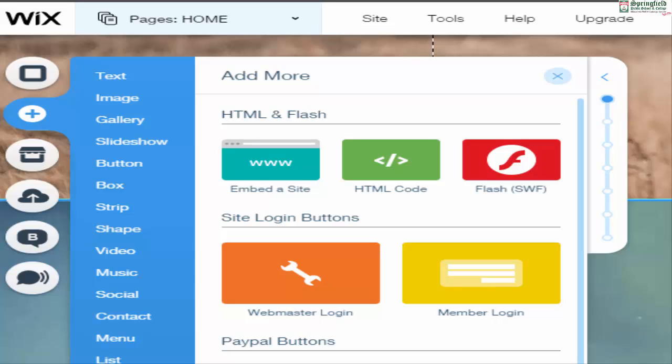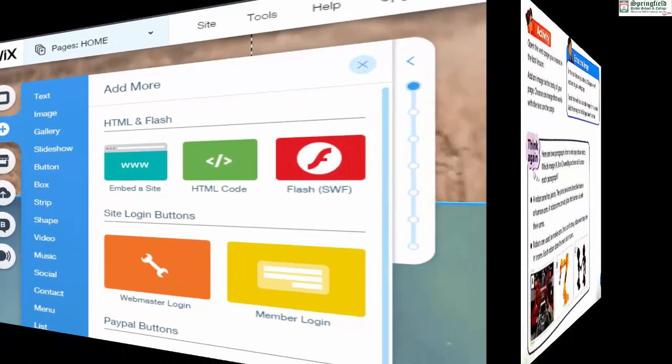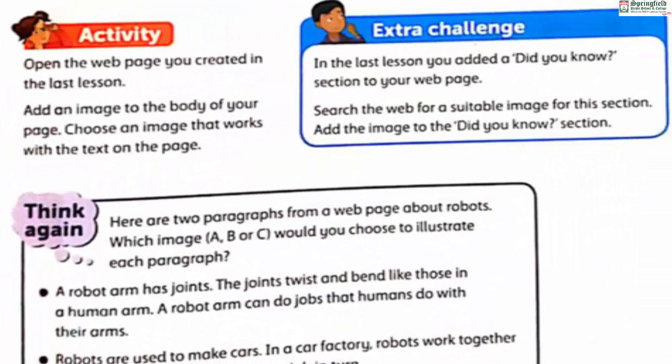From the activity, select an image you want to add to your page, resize it, and drag it into position. For the activity: open the web page you created in the last lesson, add an image to the body of your page, and choose an image that works with the text on the page. For the extra challenge: search the web for a suitable image for the 'Did You Know' section and add it there.